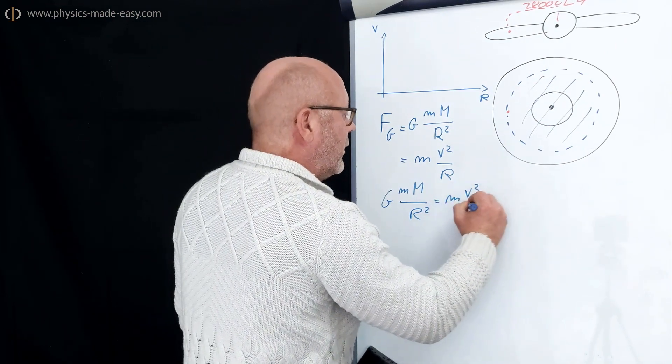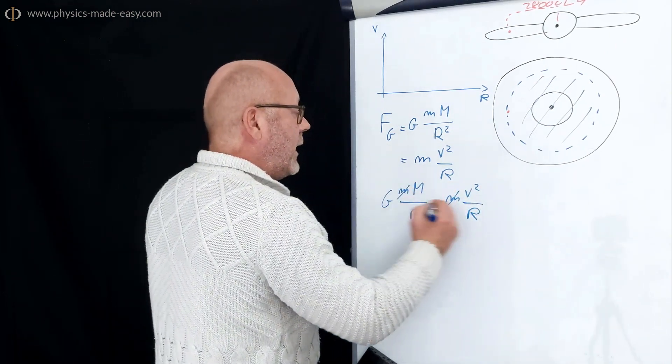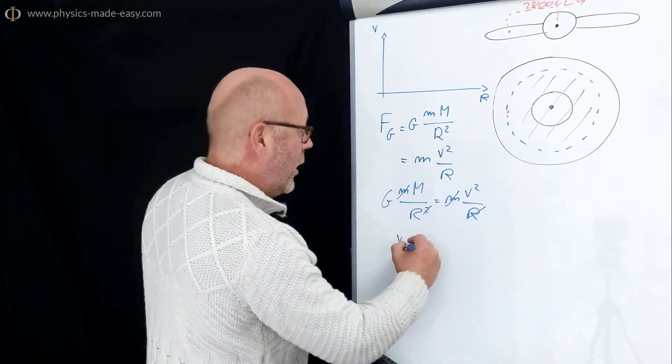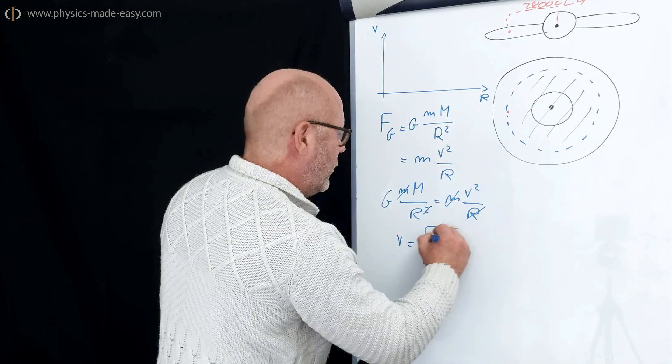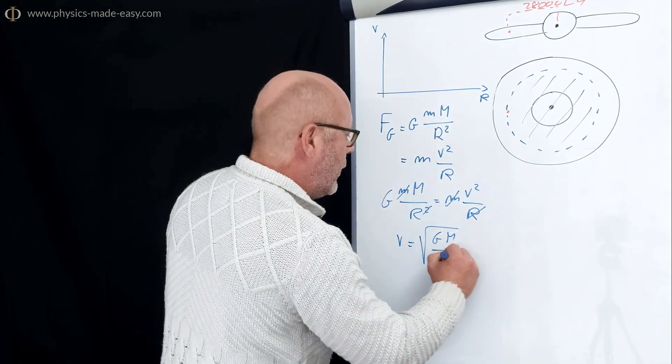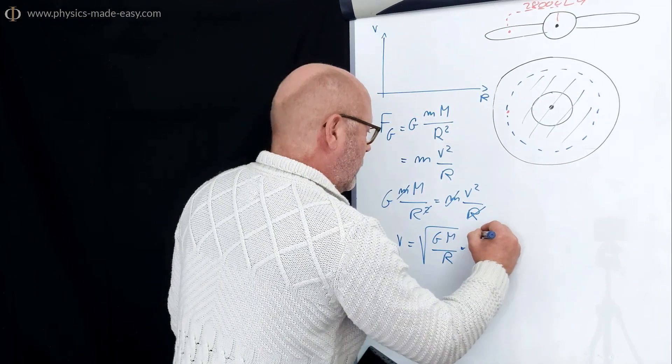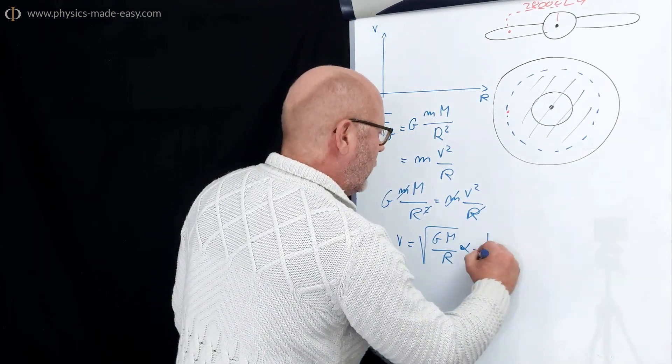That allows us to cancel the mass of the star and cancel one of the radiuses. And we end up with v squared equals GM over r or v is square root of GM over r. GM being constant, v is proportional to 1 over square root of r.